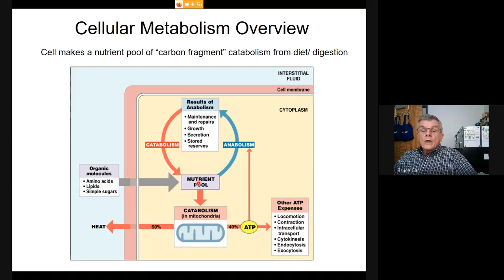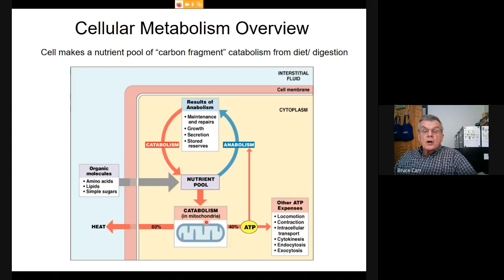These nutrients are basically all carbon fragments. They can be split apart into usable monomers and transferred into the cell and into the mitochondria. When they are broken down, we generate CO₂ and water.